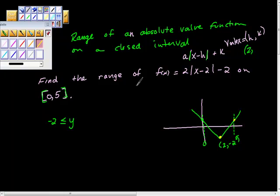So what's f of 5? f of 5 is equal to 2 times the absolute value of 5 minus 2 minus 2. 5 minus 2 is 3, the absolute value of 3 is 3. 2 times 3 is 6. 6 minus 2 is 4. So this is the point 5, 4.